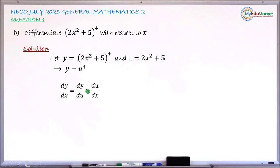Starting with dy/du: differentiating y = u⁴ gives 4u³, since the power reduces by 1. For du/dx: differentiating u = 2x² + 5 gives 4x, because 2 multiplied by the coefficient 2 gives 4, the power reduces from 2 to 1 giving just x, and the derivative of the constant 5 is 0.